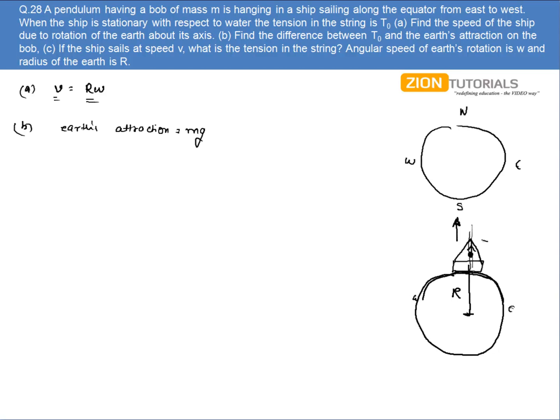Now since it is moving from east to west at condition of equilibrium along this axis, I can write T₀ is in radial direction, Mg is downward toward the center, and of course a centripetal force that will be given by M omega² R.